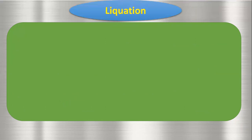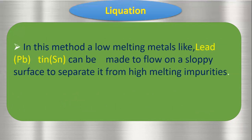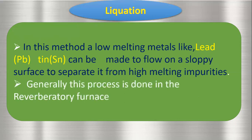The next purification method is liquation. In this method, low melting metals like lead and tin are purified. Liquation means the metals are converted into liquid form and made to flow on a sloped surface to separate them from the high melting impurities. This liquation is generally done in a reverberatory furnace, which provides the huge amount of heat required.